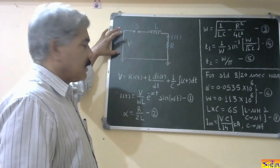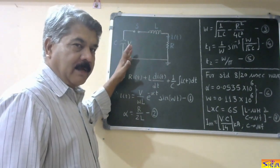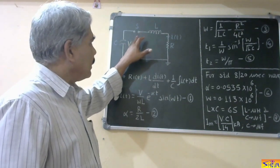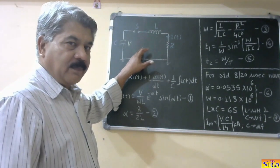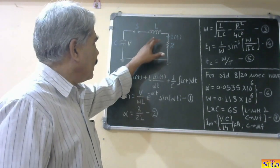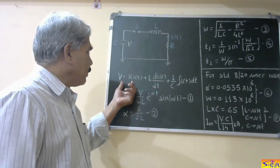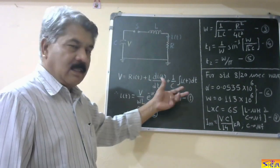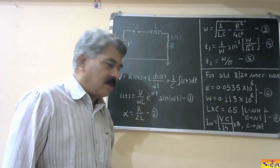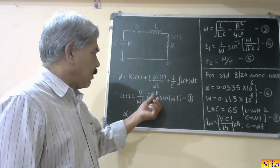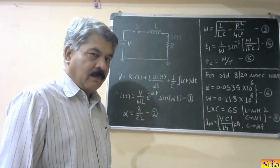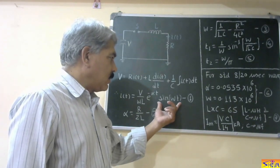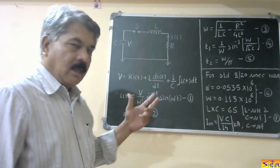The principle is that a capacitor bank is previously charged to voltage V, and after charging, the spark gap is fired and the capacitor discharges into the circuit. The discharging circuit consists of R, L, and C, giving the differential equation: V = R·i(t) + L·di(t)/dt + (1/C)∫i(t)dt. The solution of this differential equation gives i(t) = (V / ωL) · e^(−αt) · sin(ωt), which is equation number one. This shows the current is of damped oscillatory nature due to the sine term.